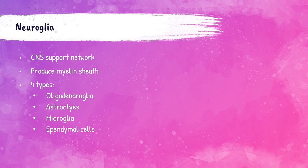Most of the central nervous system does not contain connective tissue proper — it only exists in the meninges covering the brain and in blood vessels. Because there is no connective tissue proper, the neural glia, also referred to as glial cells, serve as the supporting network. Neurons are surrounded by glial cells, which are responsible for producing the myelin sheath. There are four types: oligodendroglia, astrocytes, microglia, and ependymal cells.